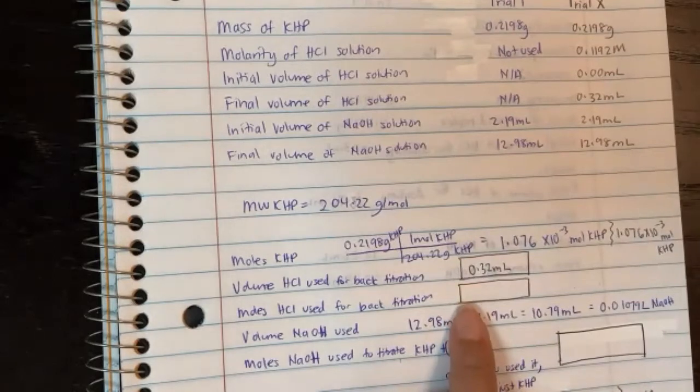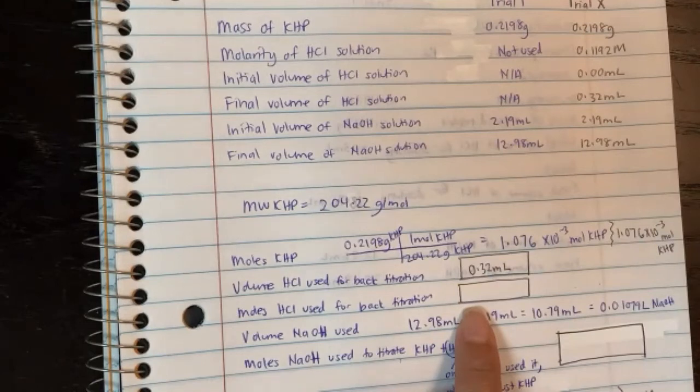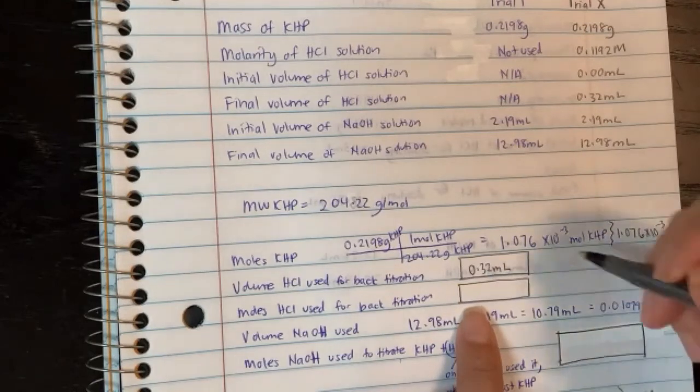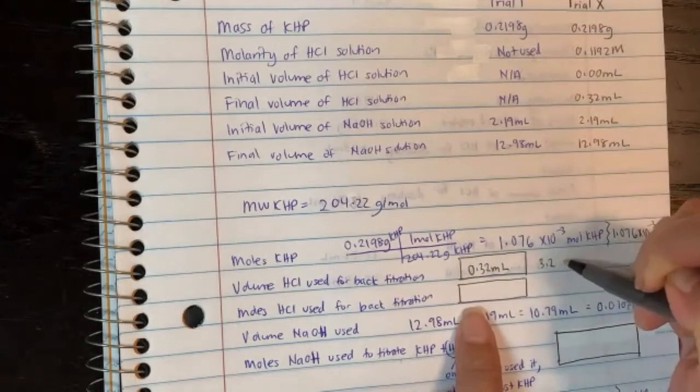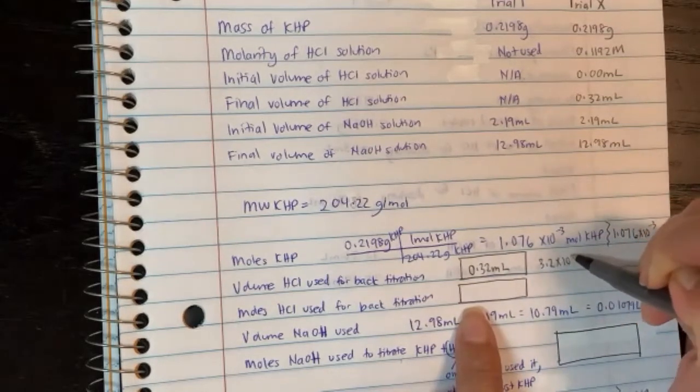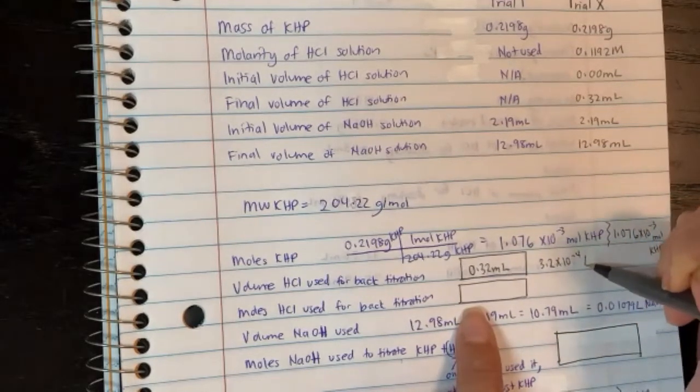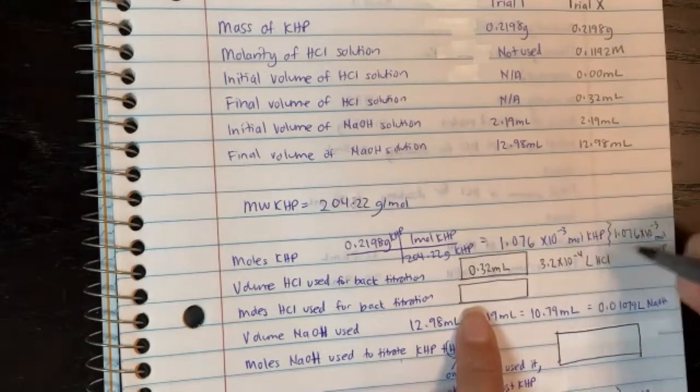So to get 0.32 milliliters, if I want to get moles, I need to convert this to liters. So take 0.32 and divide that by 1000 to turn it into liters, which this will be 3.2 times 10 to the minus 4 liters of HCl.